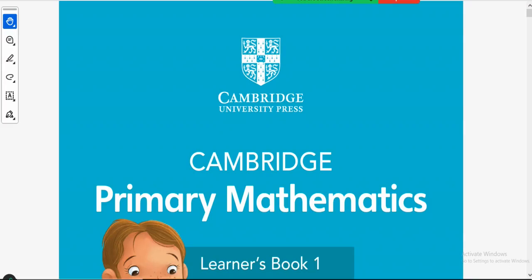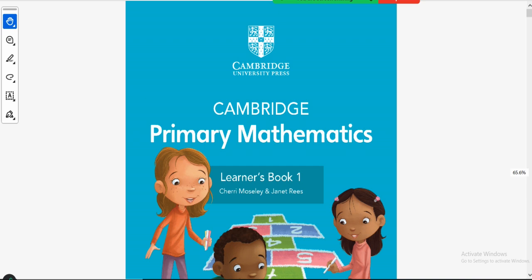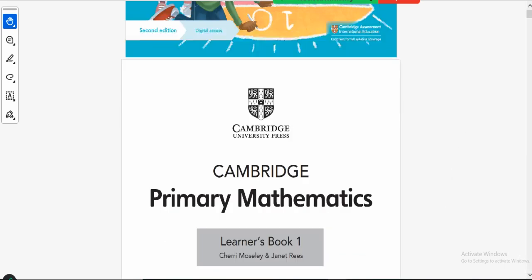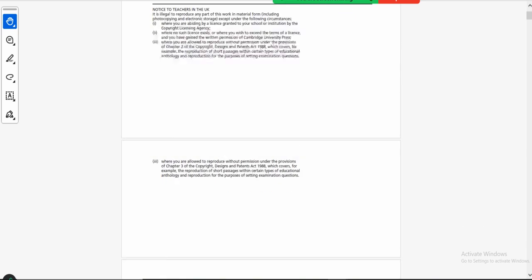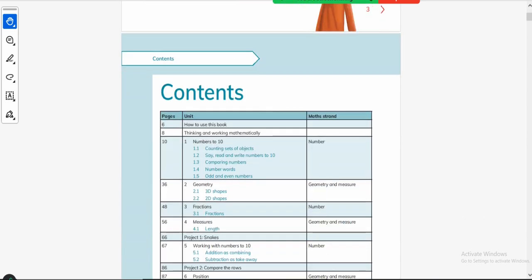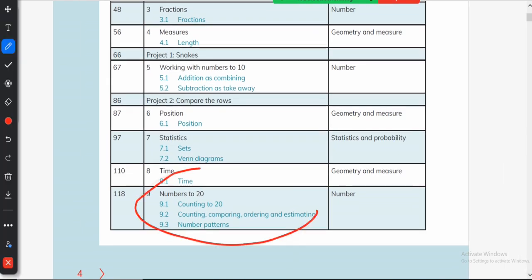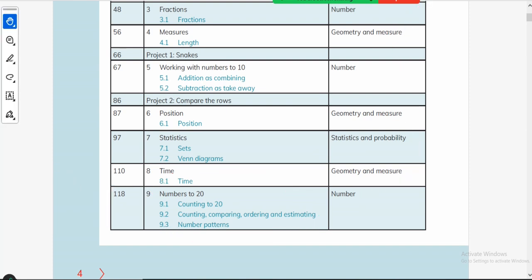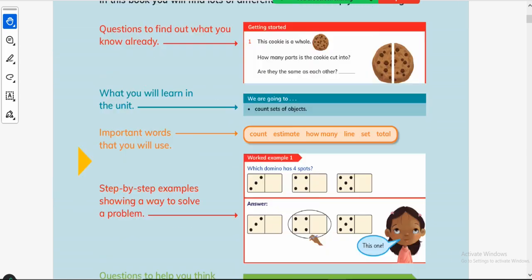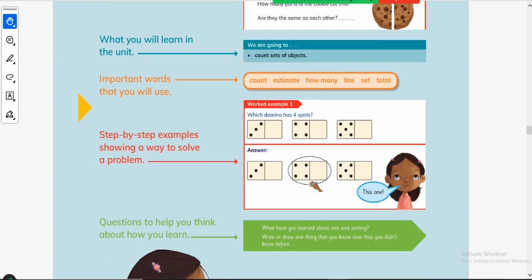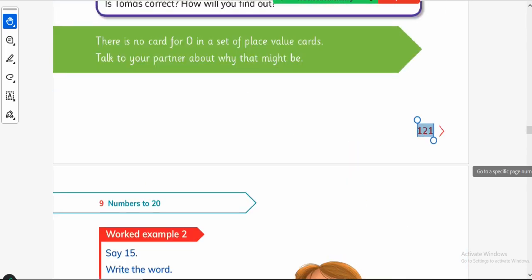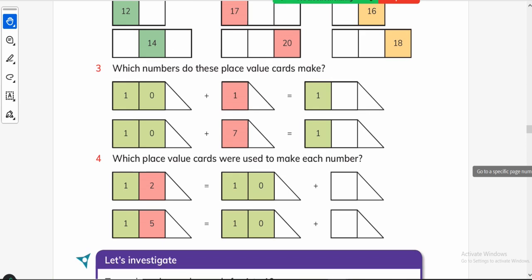Bismillahirrahmanirrahim and assalamu alaikum, this is Cambridge Primary Mathematics Learner's Book and I am Asi Asin. In my today's video we will do Unit Number 9 that is about numbers to 20. In our previous units, we were just discussing the numbers till 10, like add up to 10, count up to 10, but now we have to introduce numbers till 20.